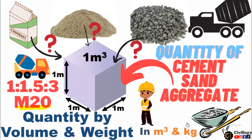As you can see here, the cement ratio is very high. In this video, we are going to calculate the quantity of cement, sand and aggregate by volume and by weight — that is in cubic meters and in kg. So let's start our today's topic.